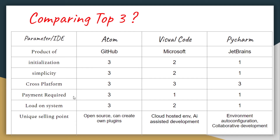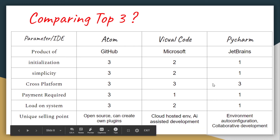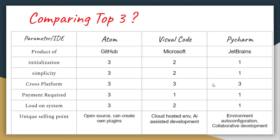Coming to Payment Required — meaning if we need to pay to get all the tools available. Atom, being from GitHub, is open source and absolutely free. Visual Code has almost all features completely free, but some Microsoft tools like Azure Development tools are paid. PyCharm has different editions — community level and professional level — so we need to pay some amount to get the complete toolset. For load on system — meaning how much the editor affects the capacity and performance of our system — Atom being lightweight does not affect much, Visual Code fairly in the middle can affect performance quite a bit, and PyCharm with its heavy features will heavily affect our system if we don't have good configurations.